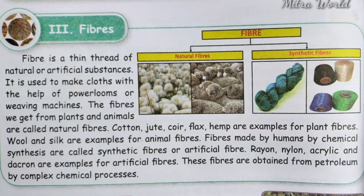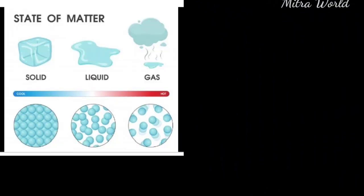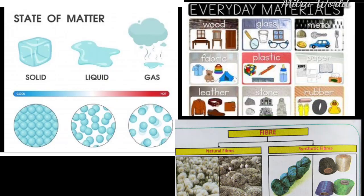To summarize: states of matter are solid, liquid, and gas. Materials and fibers — fibers are of two types: natural fibers and synthetic fibers. Natural fibers include cotton, jute, coir, flax, and hemp. Synthetic fiber examples are rayon, nylon, acrylic, and dacron. Thank you children, happy learning!